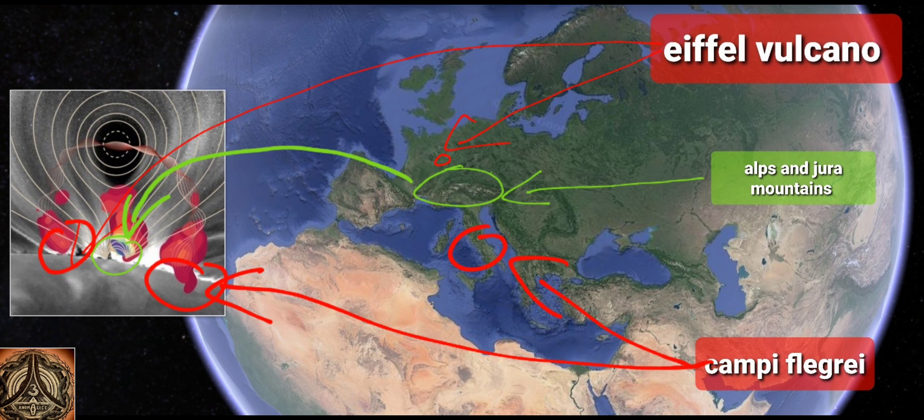Everybody knows how a magnet works. If you have two magnets — let's say they are attracting magnets — and if you keep them far away enough, there is nothing going on, nothing visible, you don't feel anything. But if you go closer, slowly closer, there will be a speed point where it will accelerate and they snap together in the blink of an eye. This is how a magnet works.